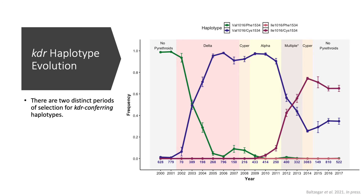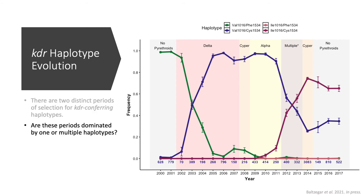This is a graph of the KDR haplotypes over the course of 18 years. Time in years is on the x-axis, haplotype frequency is on the y. Periods of the different types of pyrethroids used in the city are highlighted by colored blocks in the background. There have been two distinct periods of selection for KDR-conferring haplotypes: the first from 2002 to 2006, when the population went from most individuals being totally susceptible to most individuals carrying one resistance allele at the 1534 locus; the second from 2010 to 2014, when most individuals went from carrying one resistance allele at 1534 to carrying resistance alleles at both 1016 and 1534.